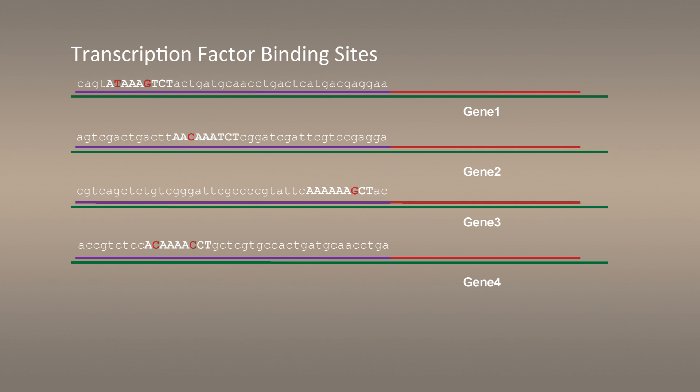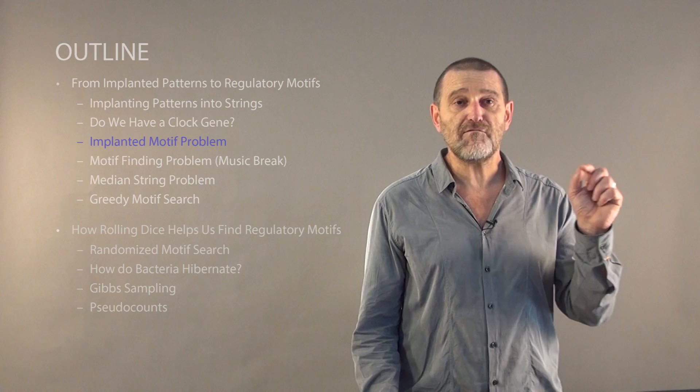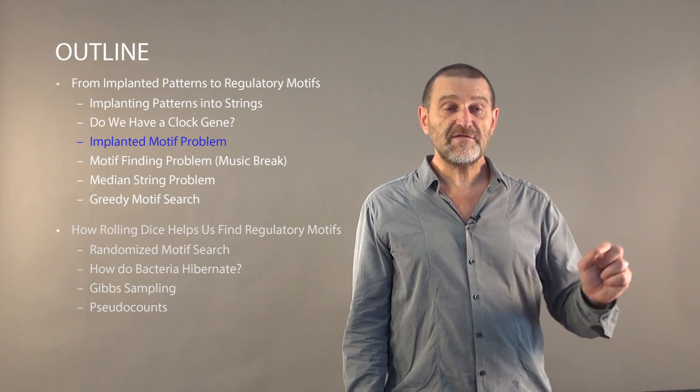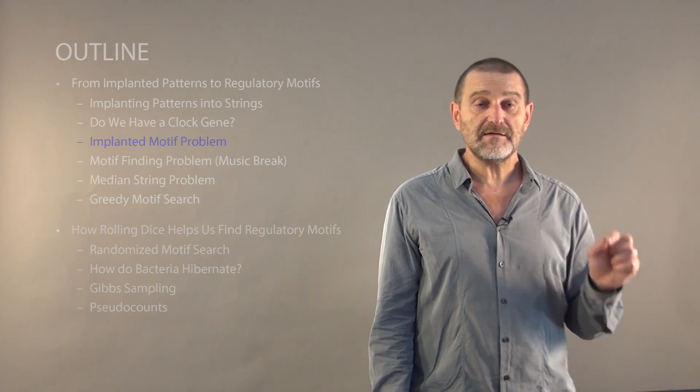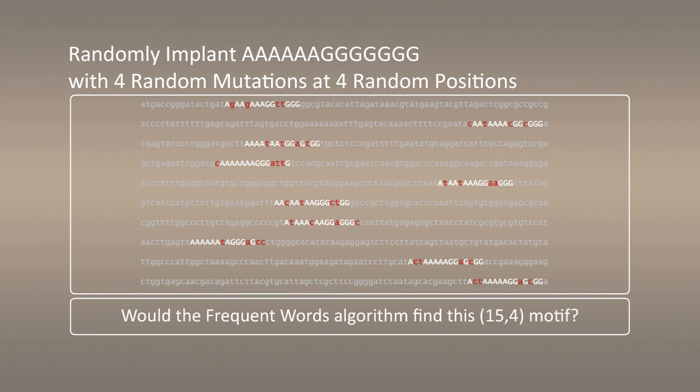Of course we don't know where these hidden messages are actually hiding in the upstream regions. Today we will learn about algorithms that aim at finding such hidden messages. We will start from formulating the problem. When we talked about implanting a 15-mer with four random mutations, we figured out that frequent words algorithm would not work to find it, because there are no frequent words that appear without mutations in the resulting strings after implantations.